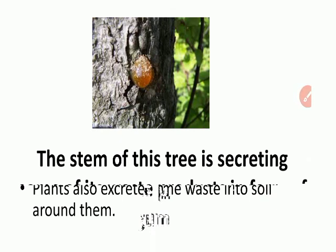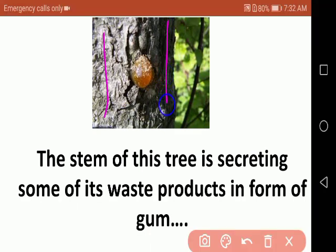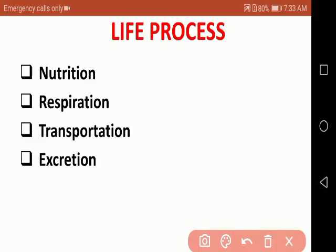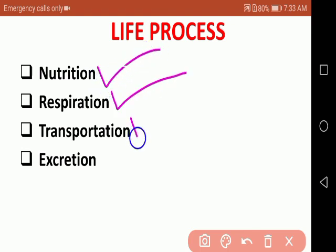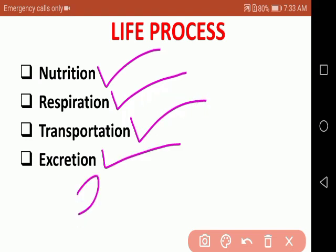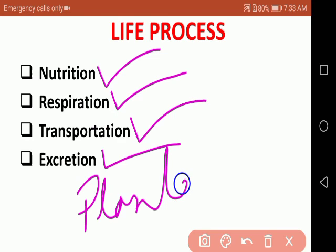With this, the chapter is complete. In this chapter we covered nutrition, respiration, transportation, and excretion — all in both plants and animals. I hope all your doubts are cleared. If you have any doubts, please comment below. Thank you.